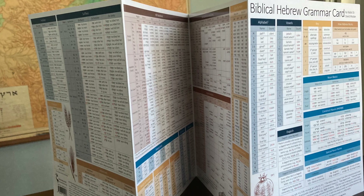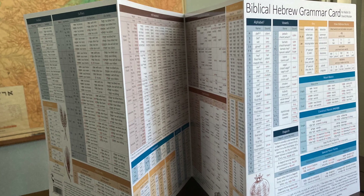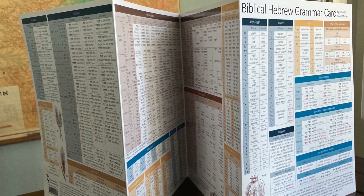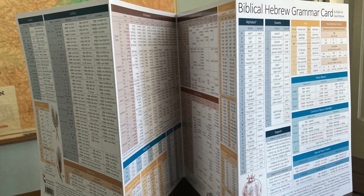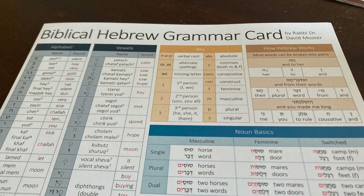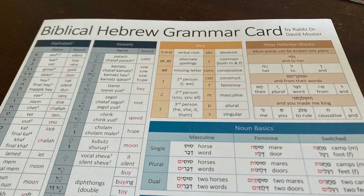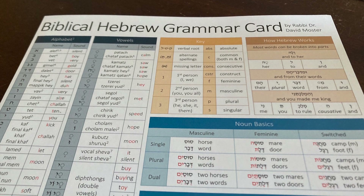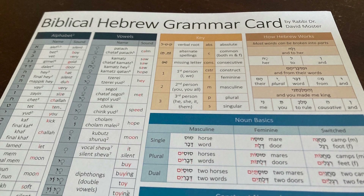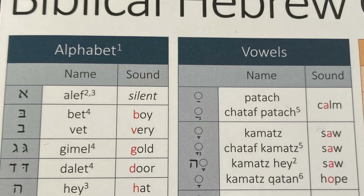Let's now move on to the second card, the grammar card. This grammar card was really the more difficult of the two to make, and it basically includes everything that I know about Biblical Hebrew. It starts with the alphabet and vowels.